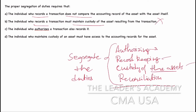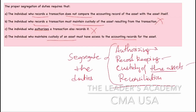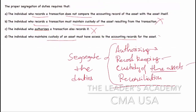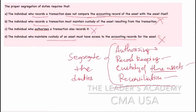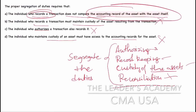Option D: the individual who maintains custody of an asset must have access to the accounting records — that is record keeping as well. Custody plus record keeping combined cannot be the answer. Now Option A: the person who records a transaction is not going to compare the accounting record of the asset with the asset itself. Comparing is done in reconciliation, and the person who records is a different person from the one who does reconciliation. That's why Option A is the right one.